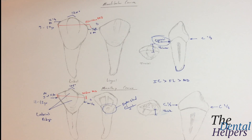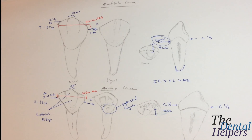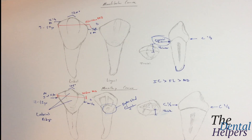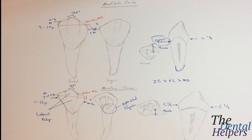Another good pointer: on the anterior teeth, the lingual surface height of contour is always the cervical third. I'm going to post my notes and leave a link below this video so if you want to access my notes you can download them. If you have any questions or concerns, leave them in the comments below. If you like the video, please hit the thumbs up, and if you like the channel, please subscribe.